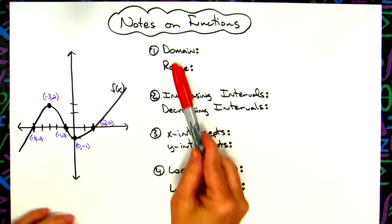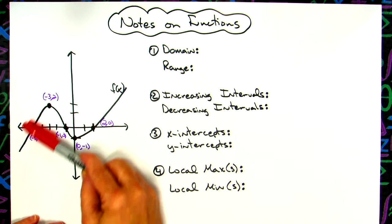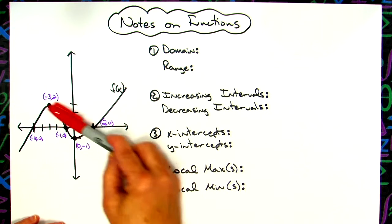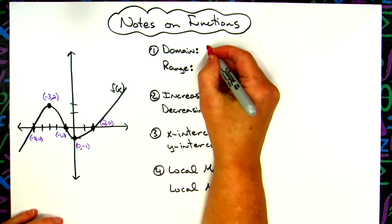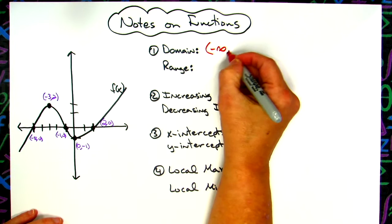So we're going to start with the domain here. Since this is a polynomial curve and goes on forever and ever and ever in both directions to the left and right, then my domain is going to be negative infinity to positive infinity.